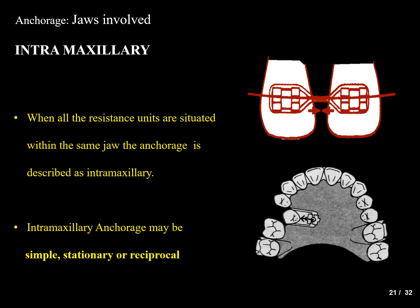The next classification is based on jaws involved. Intramaxillary anchorage is when all resistance units are situated within the same jaw — either within the maxilla or within the mandible. This can again be simple, stationary, or reciprocal based on the same criteria discussed previously.